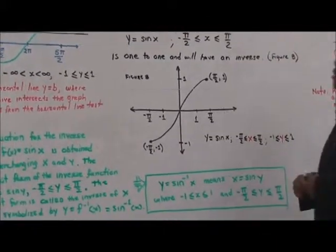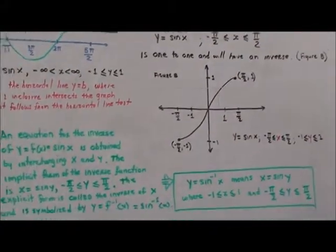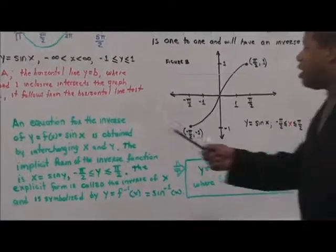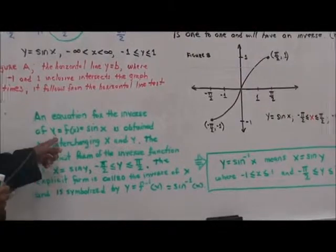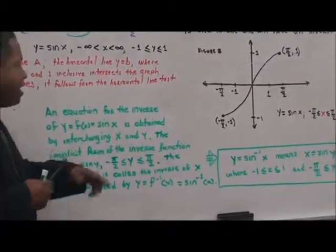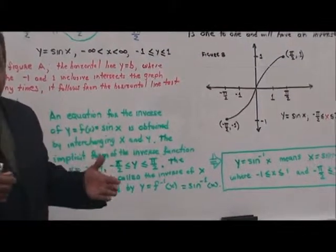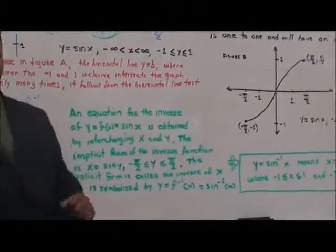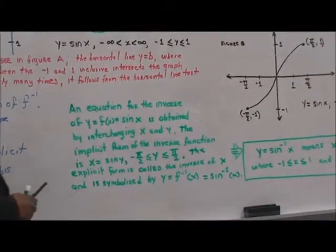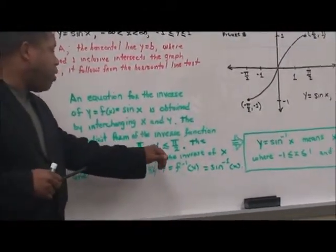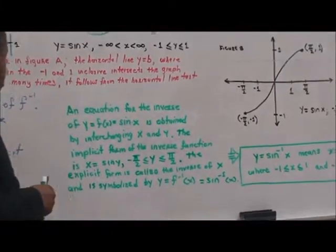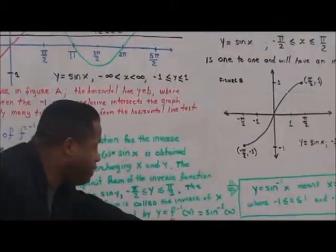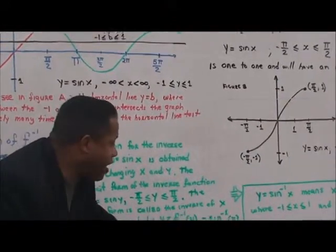Even a vertical line hits it one time, confirming it's a function. The equation for the inverse of y equals f of x equals sine x is obtained by interchanging x and y. The implicit form of the inverse function is x equals sine y, with the domain negative pi over 2 less than or equal to y less than or equal to pi over 2. The explicit form is called the inverse and is symbolized as y equals sine inverse of x.